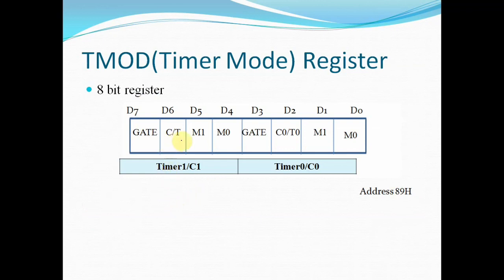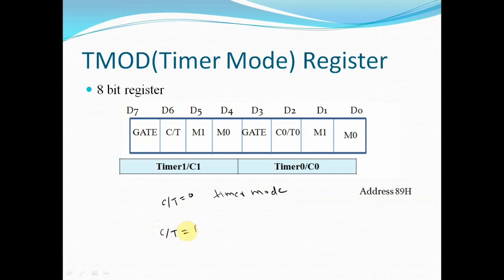The second bit is C/T. There is a C/T bit for timer 0 and a C/T bit for timer 1. C/T stands for the selection of timer or counter mode. When C/T is equal to 0 it selects timer mode, and when C/T is equal to 1 it selects counter mode. Depending on what we want, we put either 0 or 1 on bit D6 for timer 1 or D2 for timer 0.